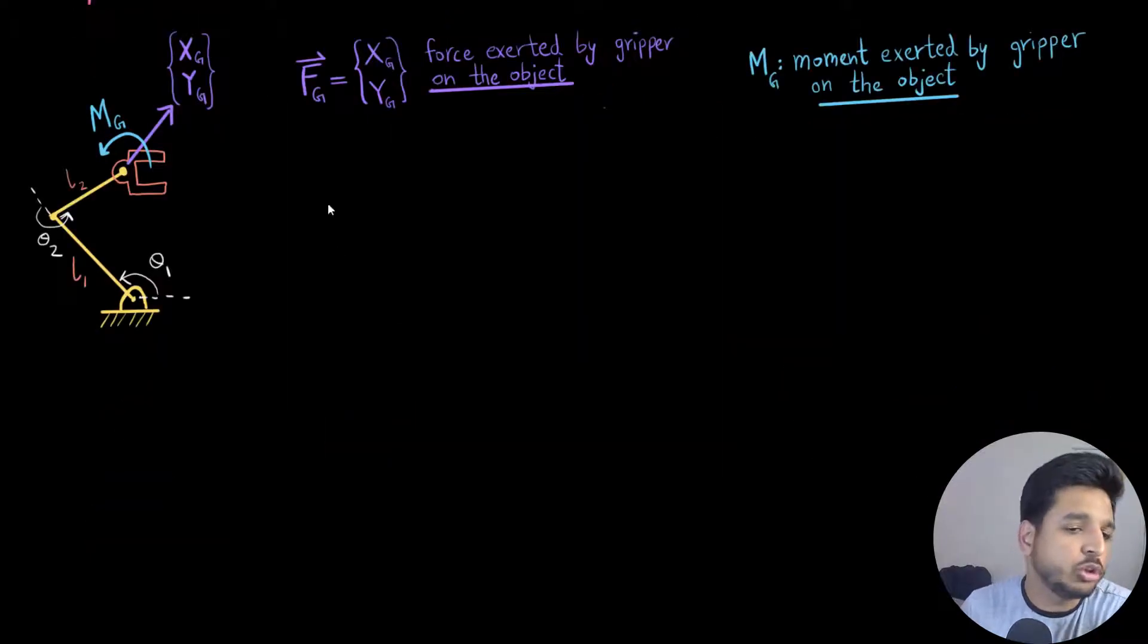So now I have redrawn the robot, but this time I have shown the angles associated with each of the revolute joint. So here theta_1 represents the angle with respect to the horizontal, which is being changed by the first motor and theta_2 represents the angle which is changed by the second motor. And now the way to go about it is we draw the free body diagrams.